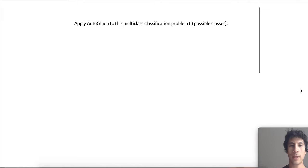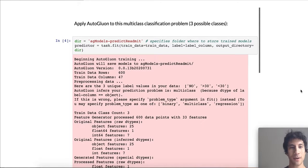Now we can apply AutoGluon to this multi-class classification problem. In this case, the multi-class problem actually has three possible classes. Here's how we do it. First, we're going to specify a folder where we want to store our trained models. Next, we call task.fit, and we point it to the training data, as well as which column contains the target values that we actually want to predict. This is all we have to do, and AutoGluon will start training models.